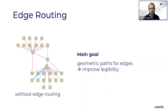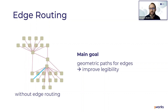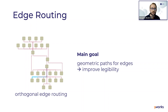The main goal of edge routing is to find geometric paths for edges to improve legibility. On the left-hand side you can see an example where nodes are connected only by straight-line edges — the simplest approach. If nodes are already placed and you connect them by straight lines, edges typically overlap other nodes or start crossing each other. One simple solution is to reroute the edges to find geometric paths so they go around nodes, forming, for example, orthogonal paths.